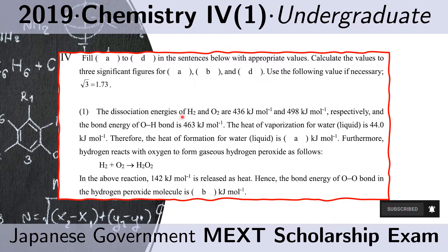The dissociation energies of H₂ and O₂ are 436 kJ per mole and 498 kJ per mole respectively. The bond energy of the OH bond is 463 kJ per mole. The heat of vaporization for liquid water is 44.0 kJ per mole.